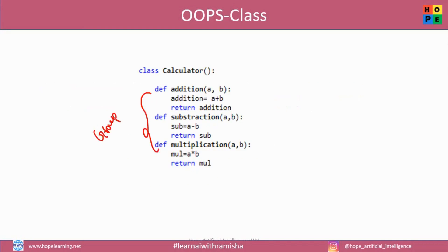For example, addition, subtraction, multiplication — that is nothing but a calculator. In the calculator, we can write the process: addition, subtraction, multiplication. So that process, we will do it like a module, we will do it like an object.